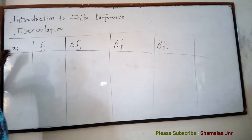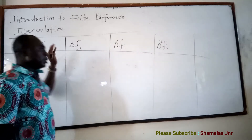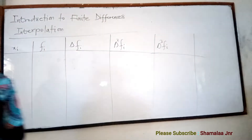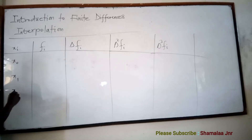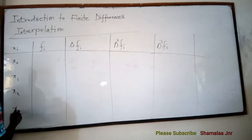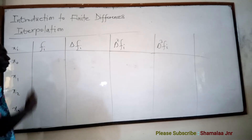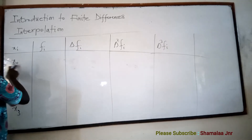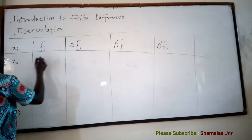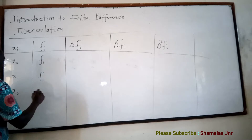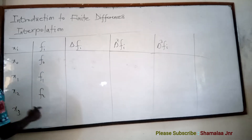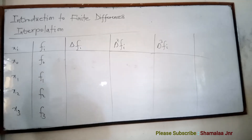If the X values are X0, X1, X2, X3, then each of these X values will have a corresponding functional value. So for X0 the functional value is F0, then F1, F2, and F3.